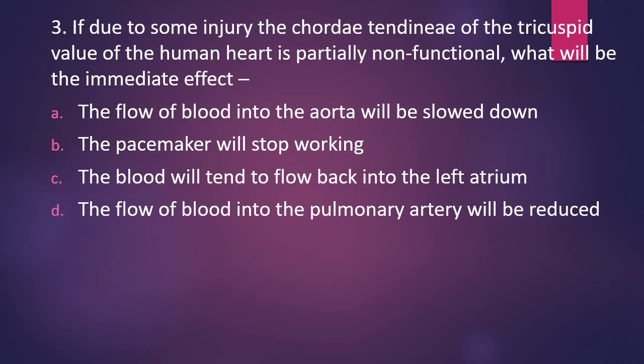Question number three: if due to some injury the chordae tendineae of the tricuspid valve of the human heart is partially non-functional, what will be the immediate effect? Options: the flow of blood into the aorta will be slowed down; the pacemaker will stop working; blood will tend to flow back into the left atrium; or the flow of blood into the pulmonary artery will be reduced. The correct answer is option D — the flow of blood into the pulmonary artery will be reduced.